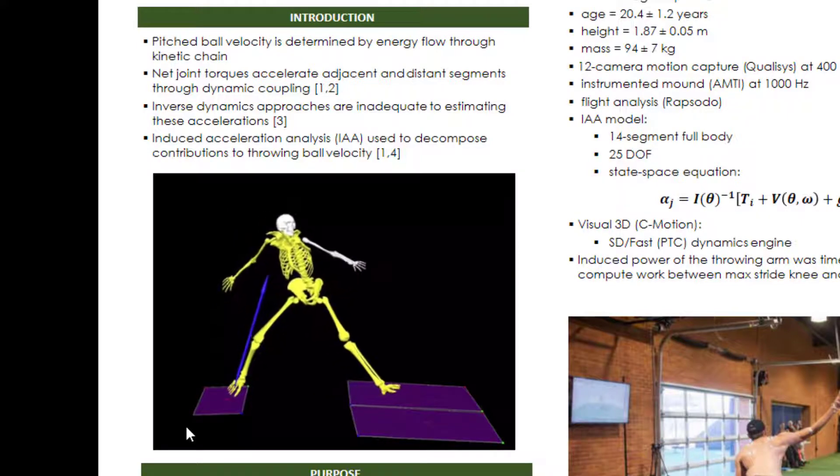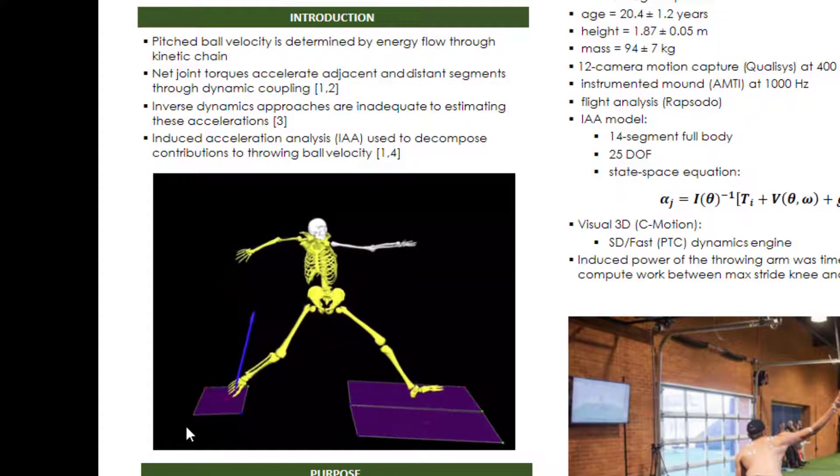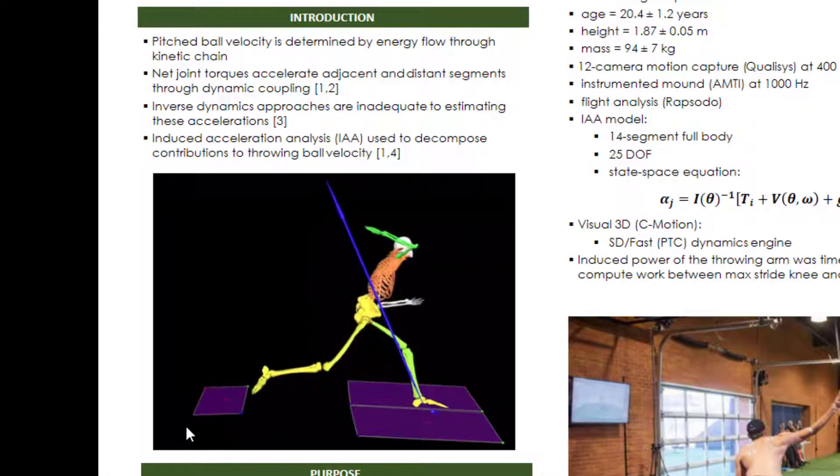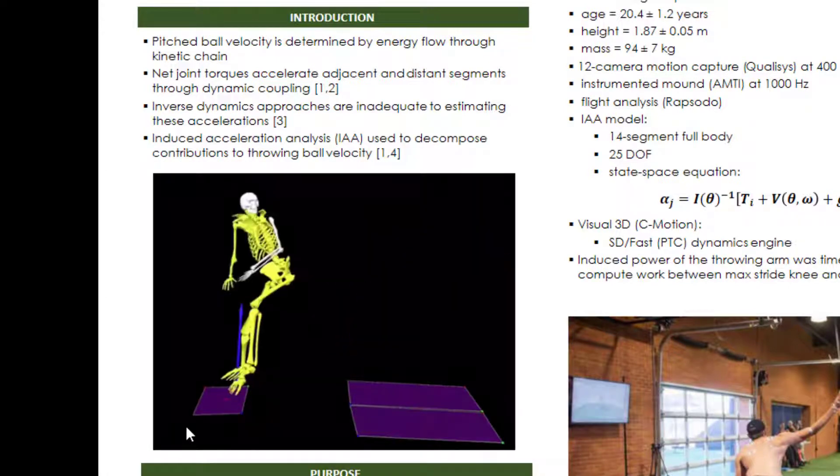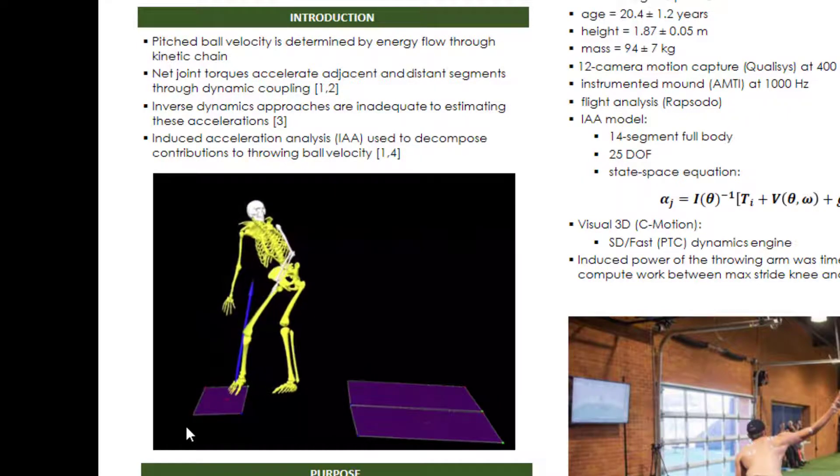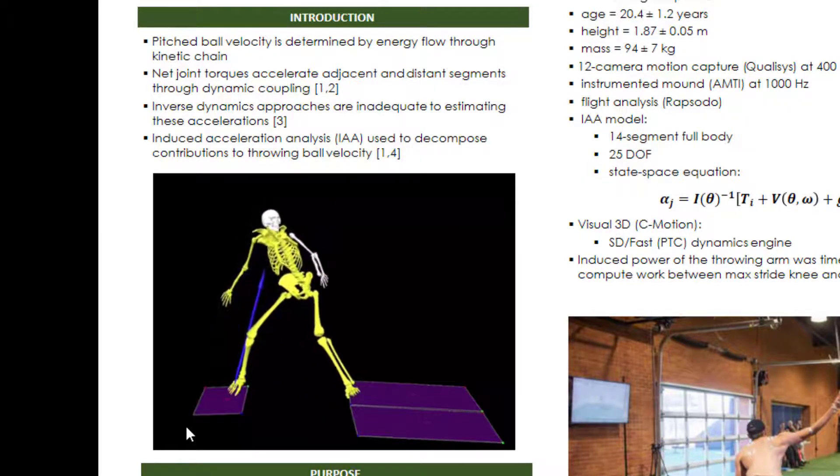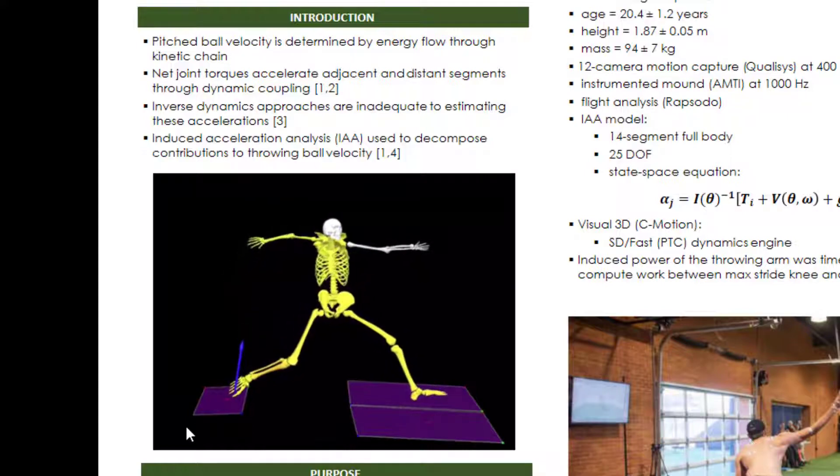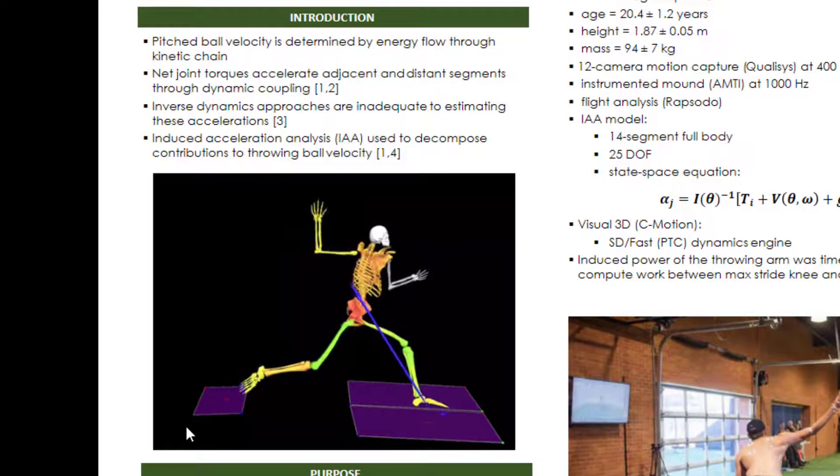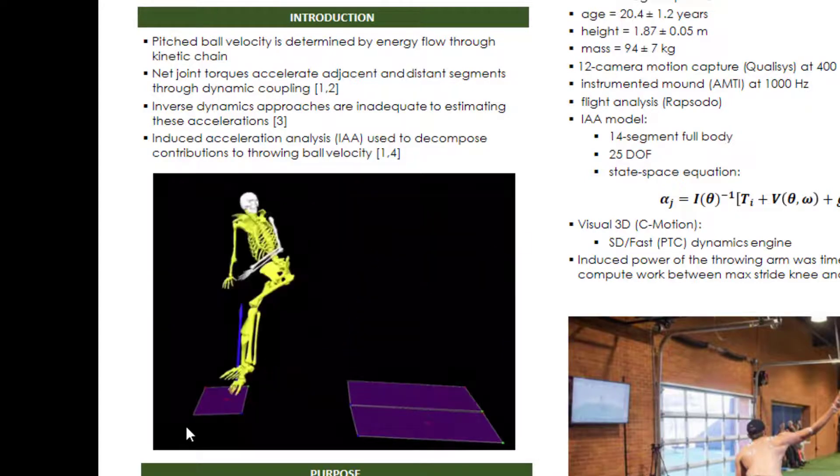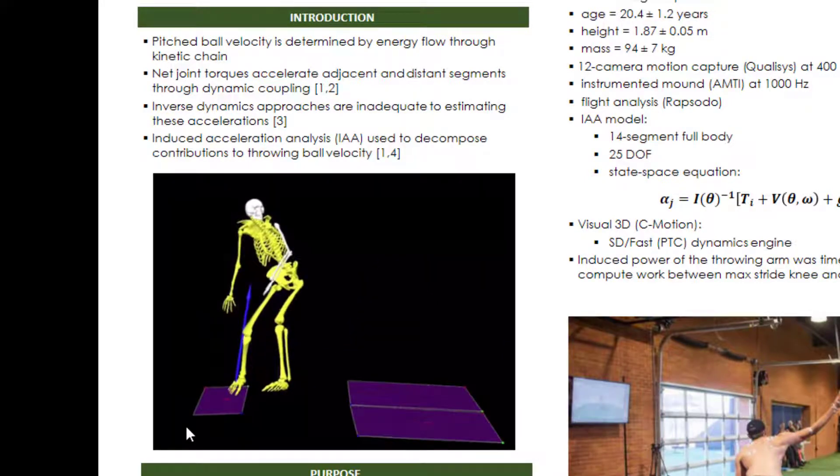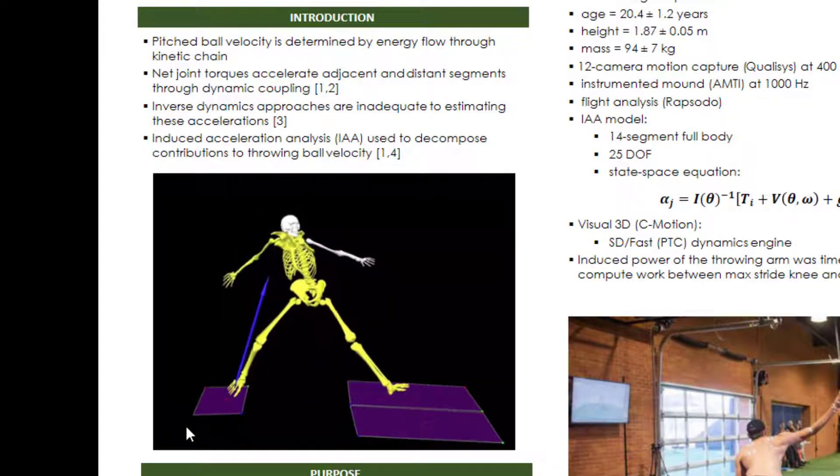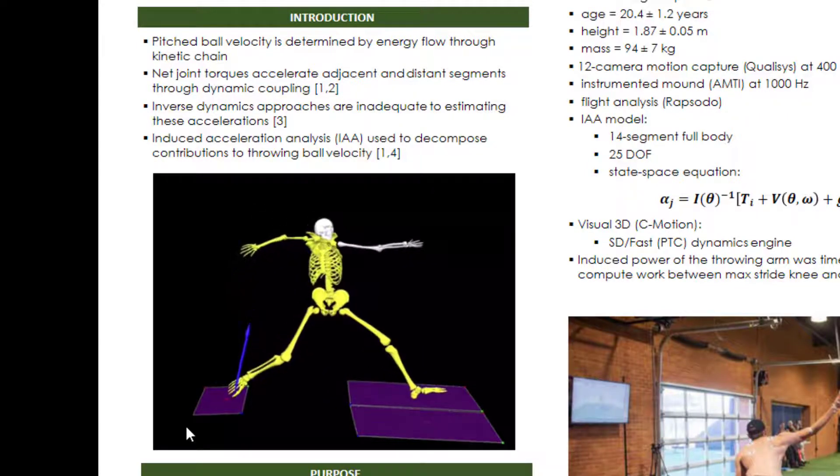However, capturing that accurately has some limitations when using inverse dynamics approaches, and this is because the assumptions of the interactions between segments is only between adjacent segments. These inverse dynamic approaches do not address the direct contributions of segments that are remotely distant from the throwing arm, for example. So as an alternative, an induced acceleration analysis has been used.